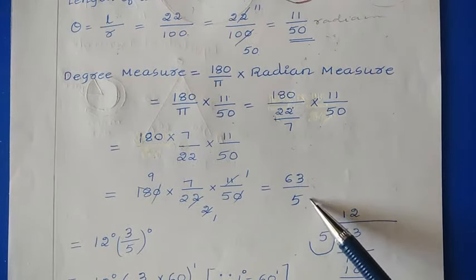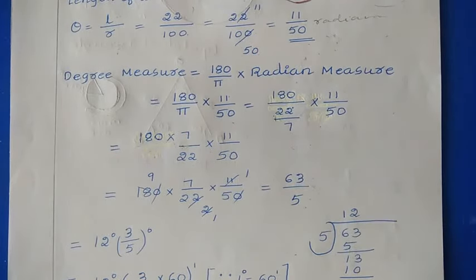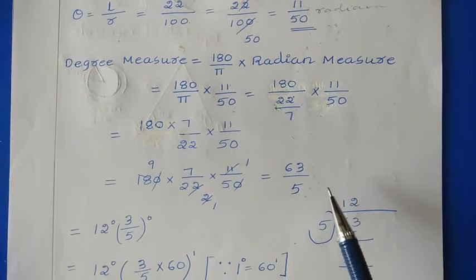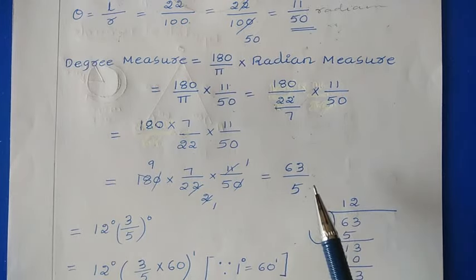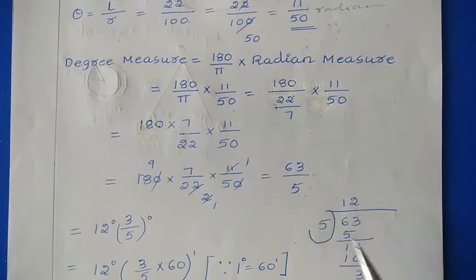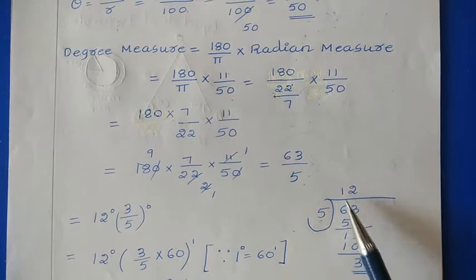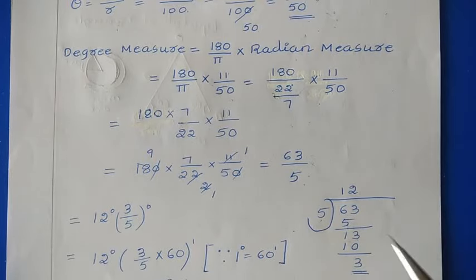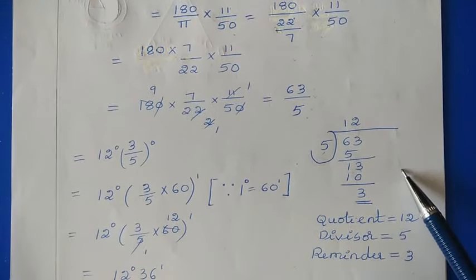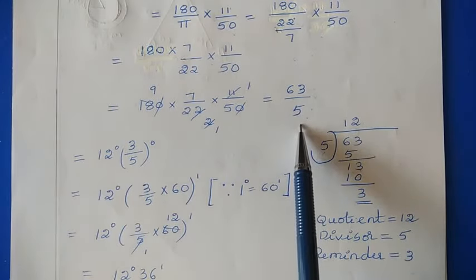This answer 63/5 is not yet in degree form. In degree measure we have degrees, minutes, and seconds — this is a fraction. To convert, perform the division: 63 ÷ 5. We get quotient 12, remainder 3, divisor 5. Write this in Q-R/D form: 12 degrees and 3/5 degrees remaining.